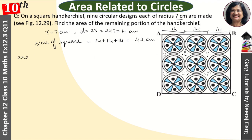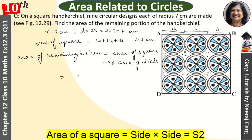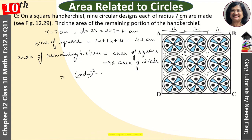So, area of remaining portion = area of square minus 9 × area of circle. Area of square formula is side². So it is side² minus 9 × π r².